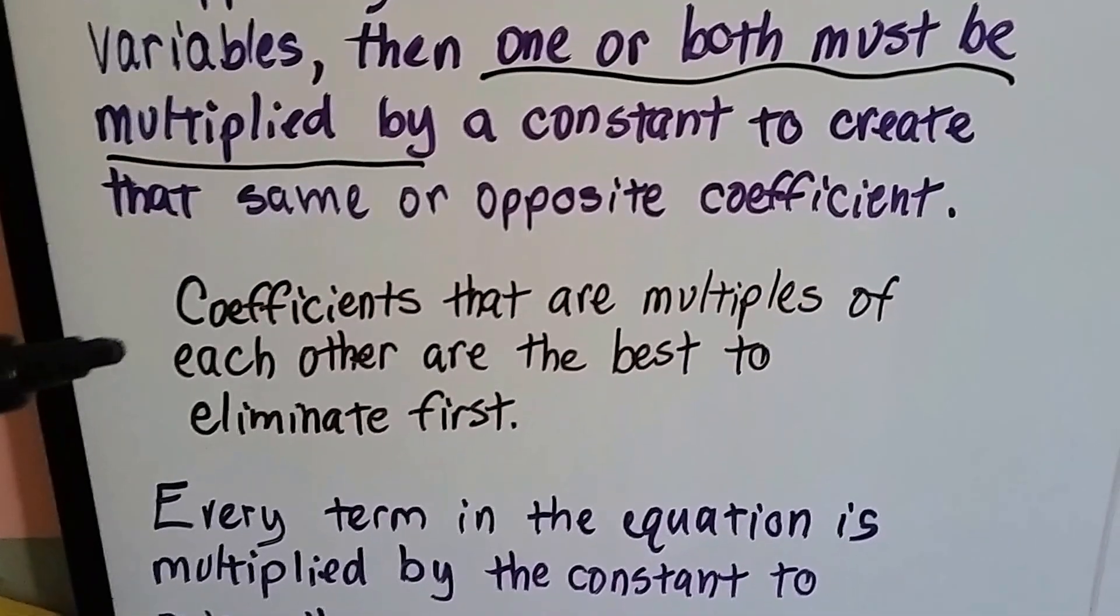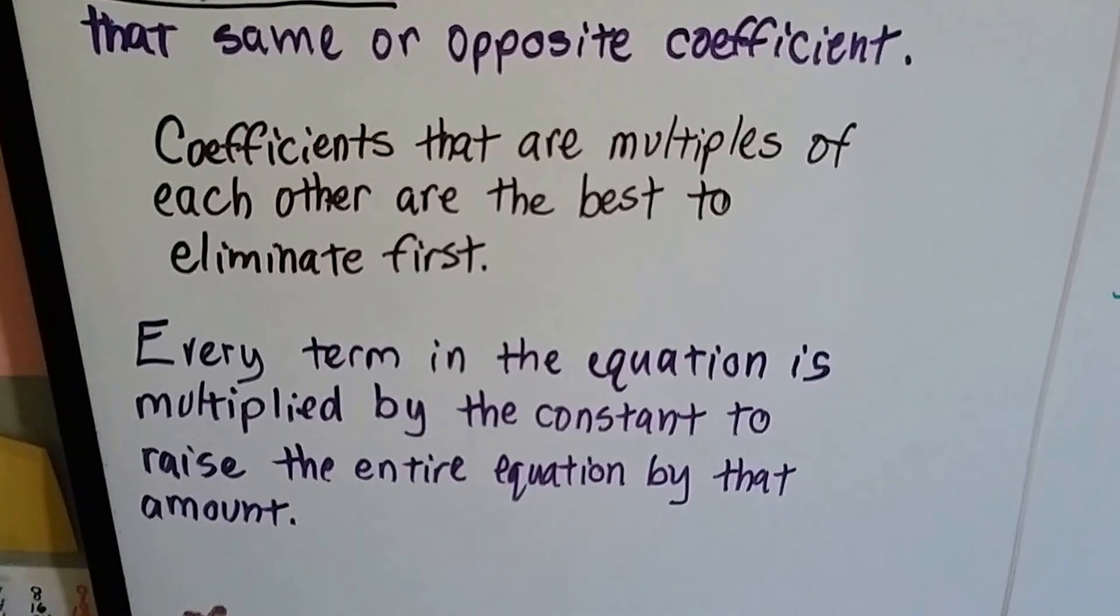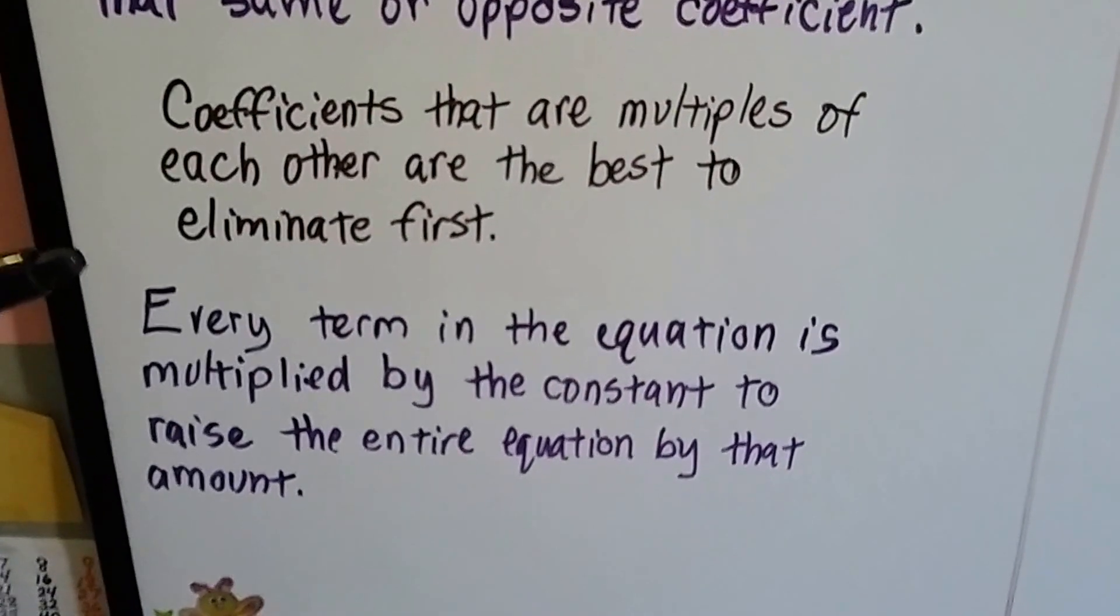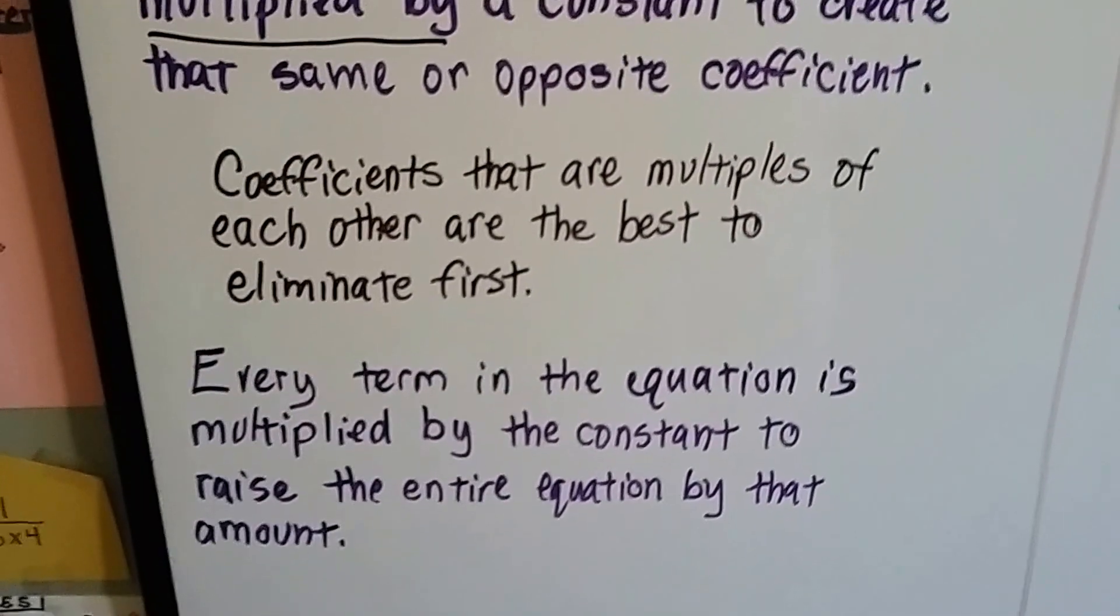Coefficients that are multiples of each other are the best to eliminate first. So every term in the equation is multiplied by that constant to raise the entire equation by that amount.